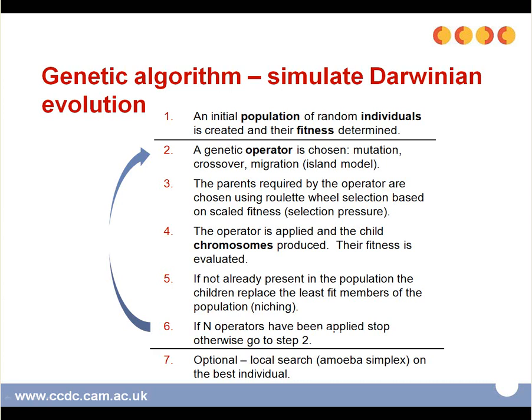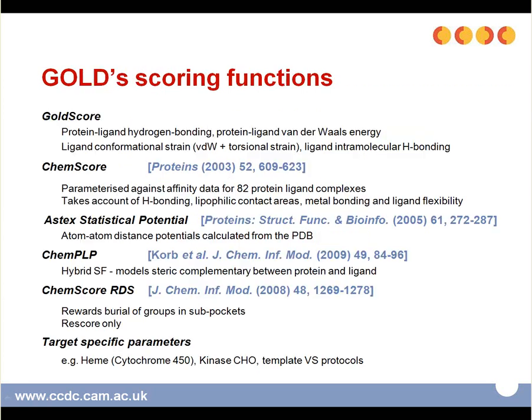Finally, there is an optional step where a local search is done on the best individual. GOLD has a set of automatic settings. When you select automatic settings, this will calculate the n number of operators based on the ligand size, the flexibility, and the number of waters.